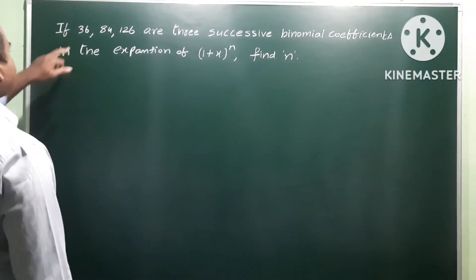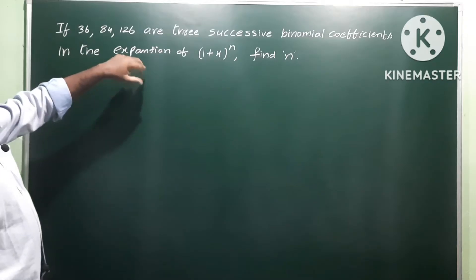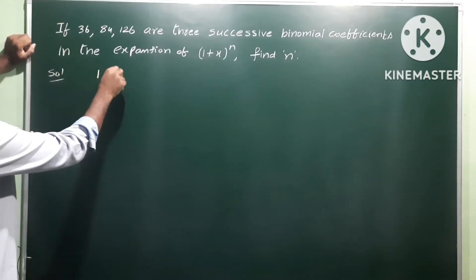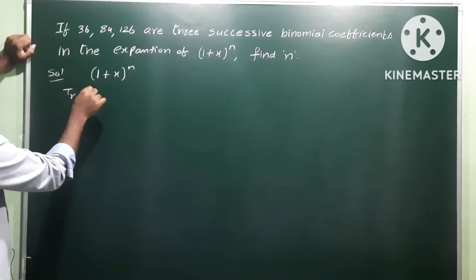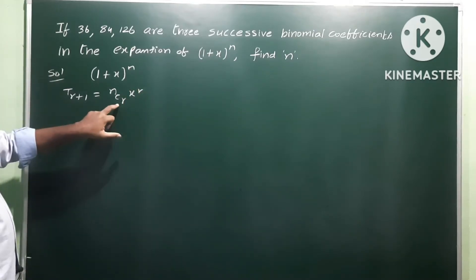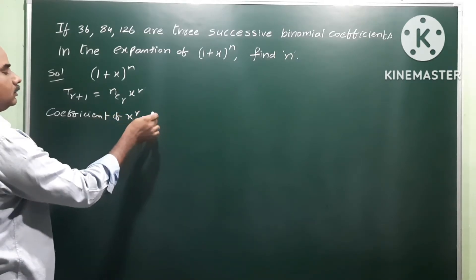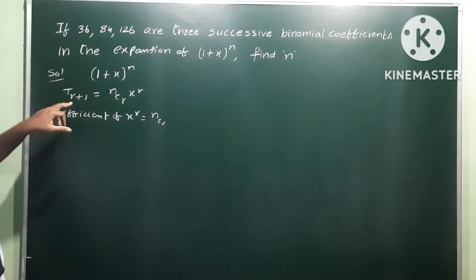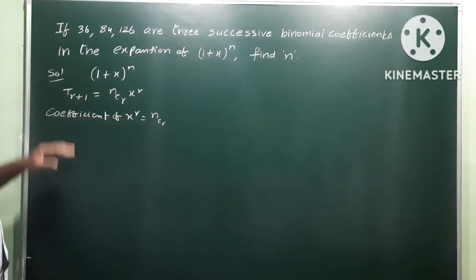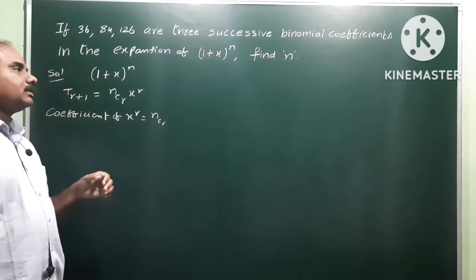The next problem: if 36, 84, 126 are three successive binomial coefficients in the expansion of (1+x)^n, find n. The general term T(r+1) in (1+x)^n is nCr * x^r, so the coefficient of x^r is nCr.